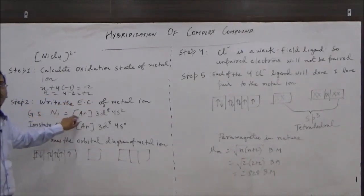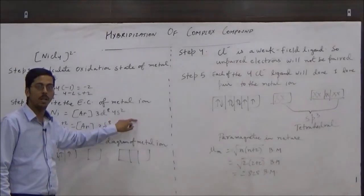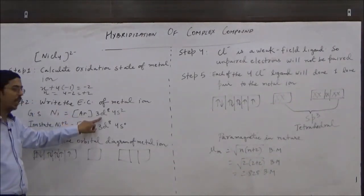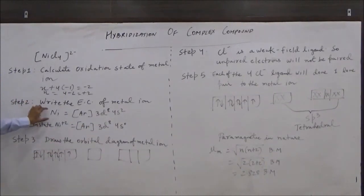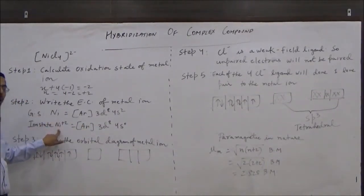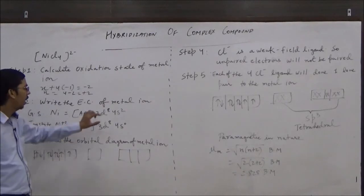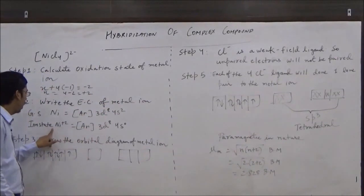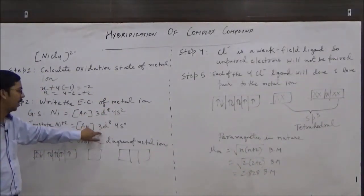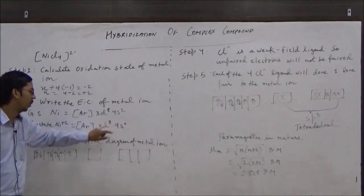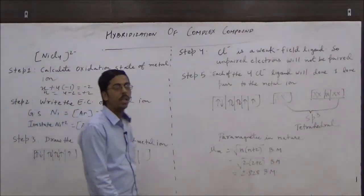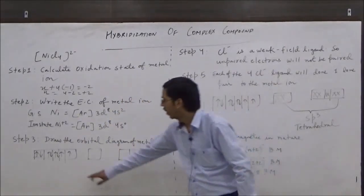Then we write the electronic configuration of the metal ion. First, the ground state electronic configuration of the nickel atom is [Ar] 3d⁸ 4s². To convert nickel atom to Ni²⁺ ion, we remove 2 electrons — both from the 4s orbital. So the new electronic configuration of the ion is [Ar] 3d⁸, 4s⁰. Then we draw the orbital diagram of the metal ion in the absence of the chloride ion.